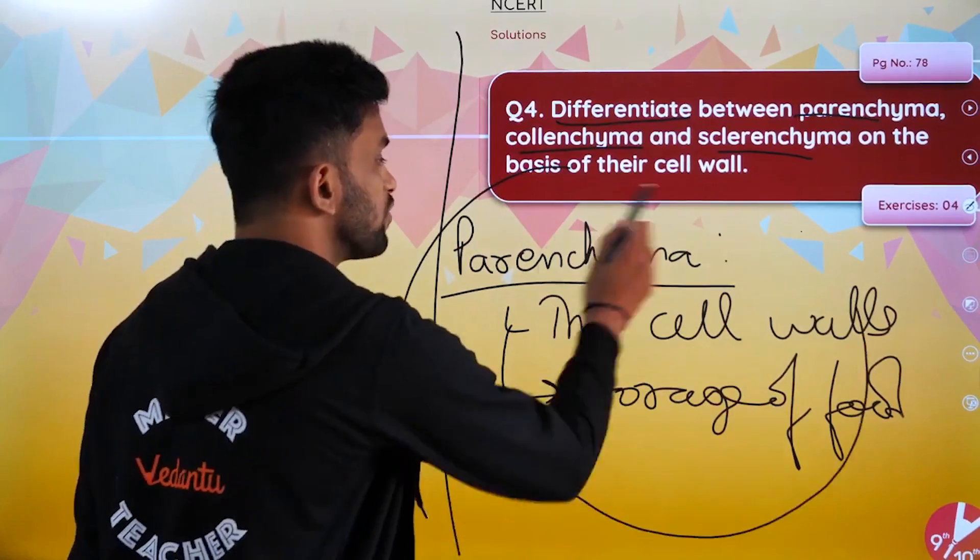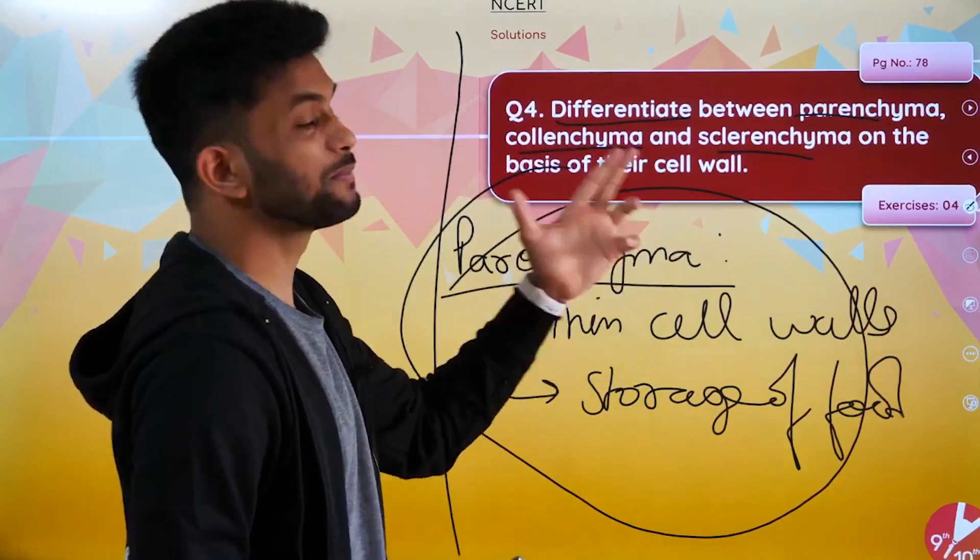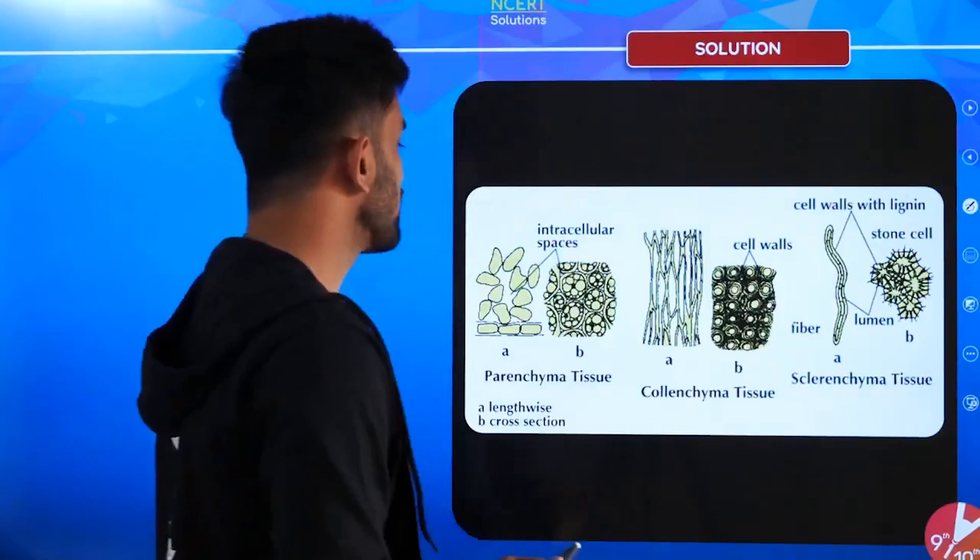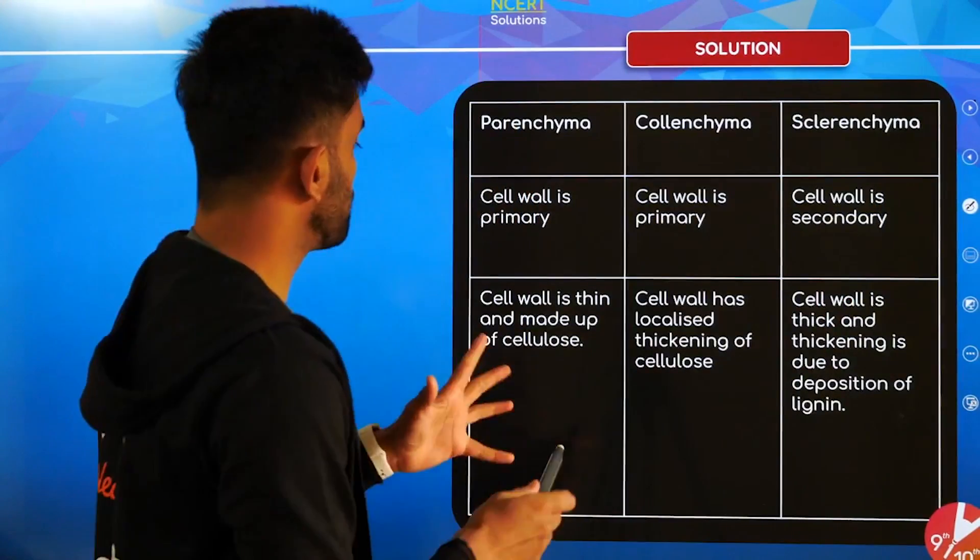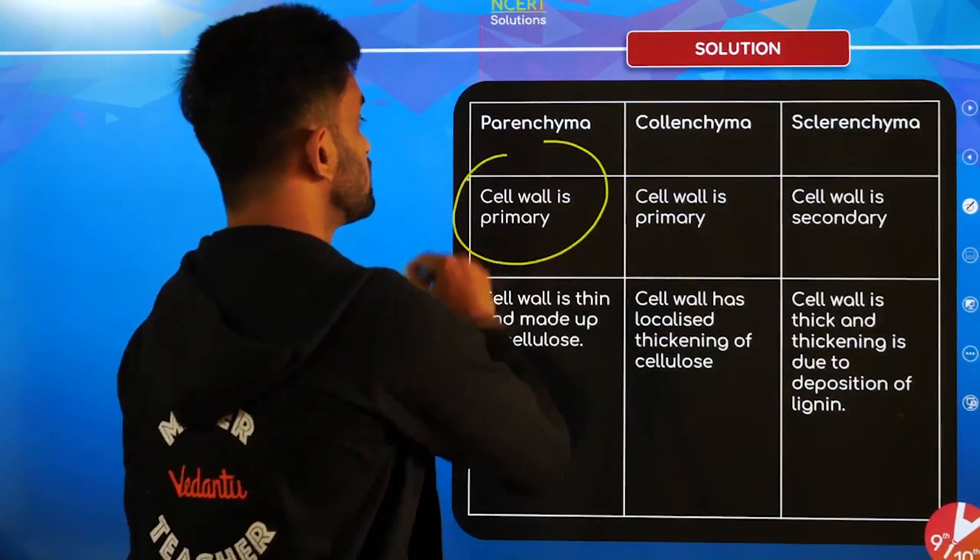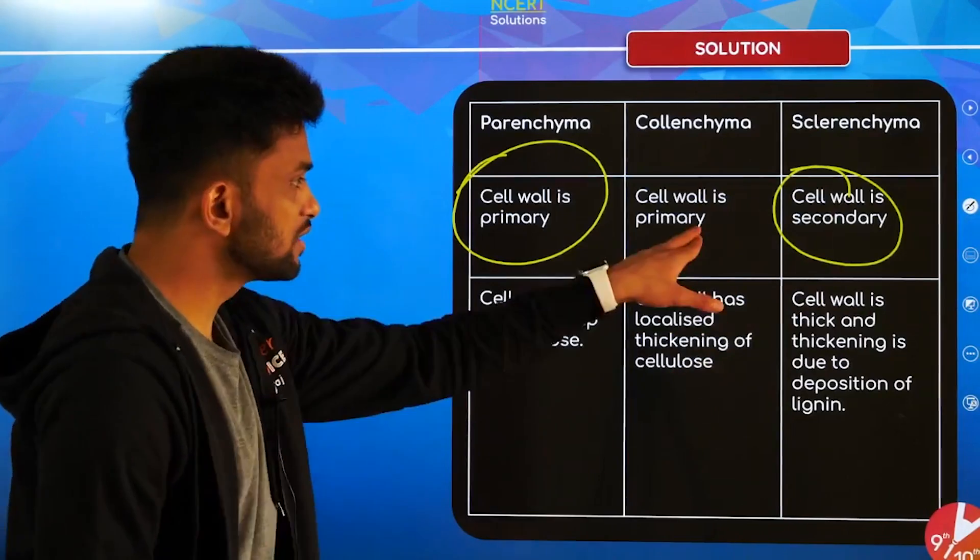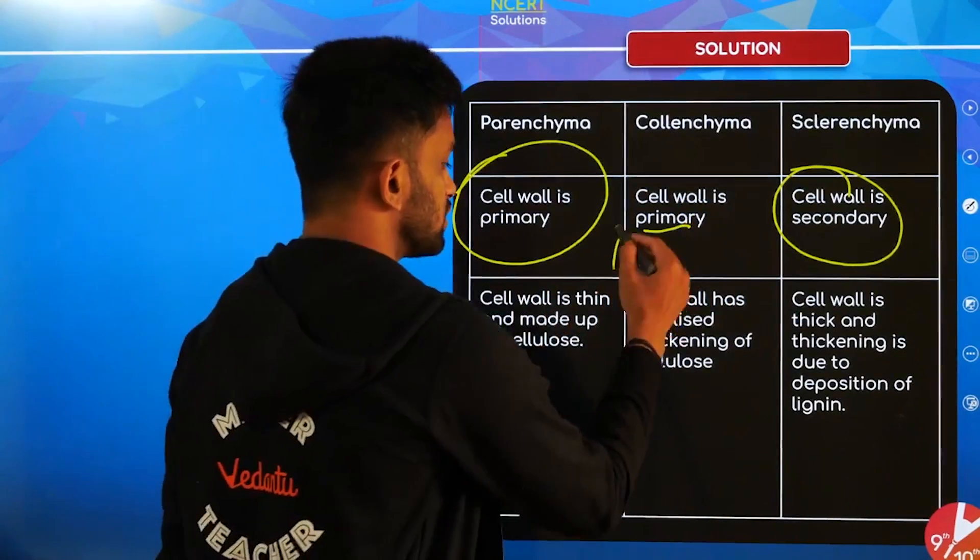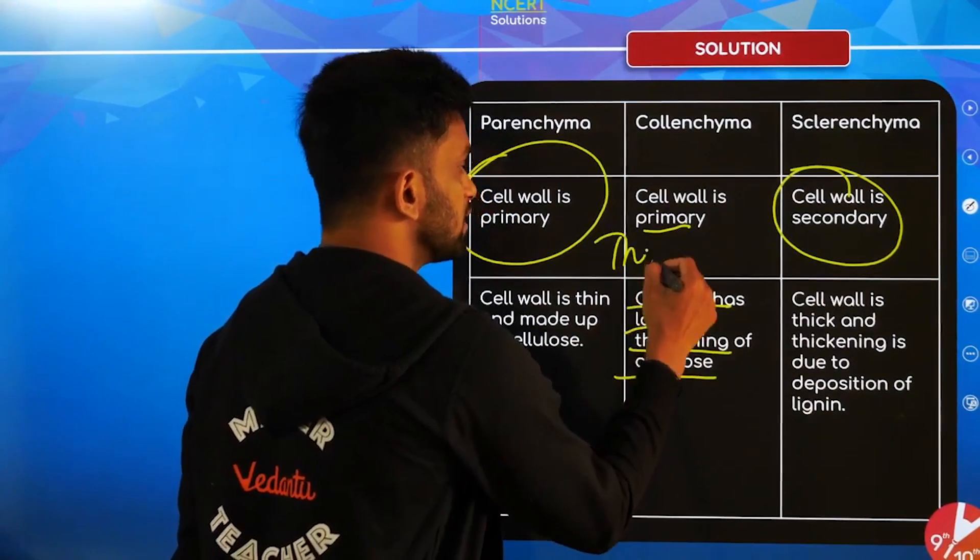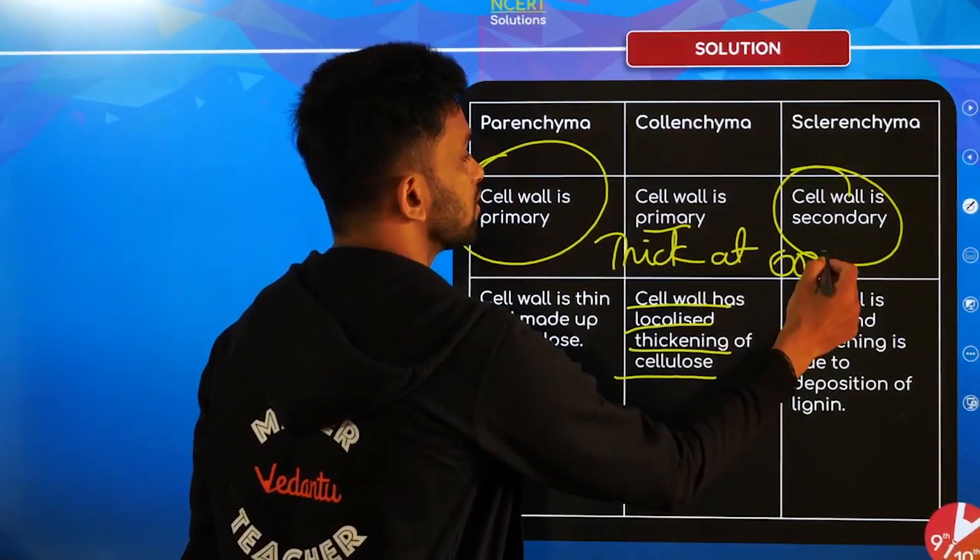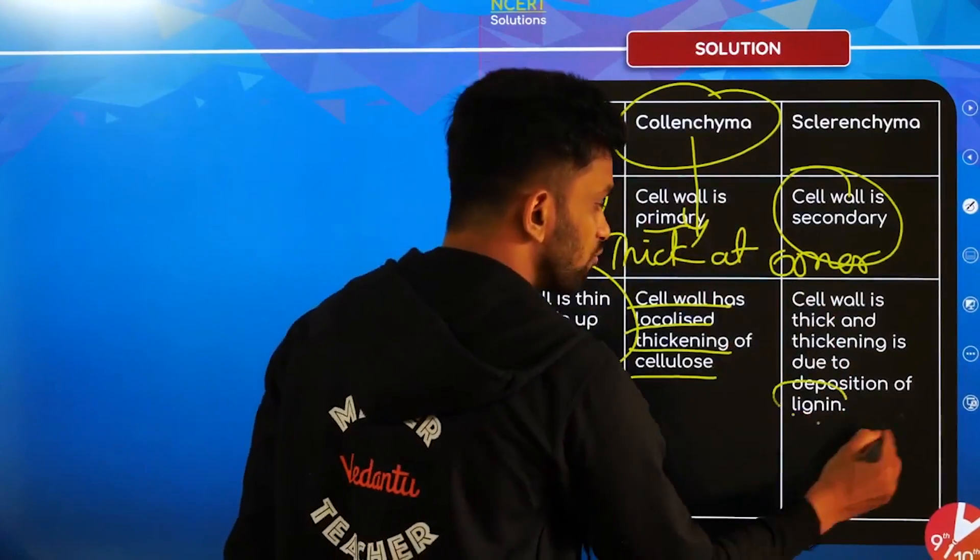Sclerenchyma has lignified cell walls which provide mechanical support or hardness to the plant. Parenchyma is found in the pith and storing areas, collenchyma is found in stems, and sclerenchyma is found in hard parts of the plant. The main points are: parenchyma has a primary cell wall which is thin; collenchyma has a primary cell wall but thick at corners with localized thickening; sclerenchyma has a secondary lignified cell wall.